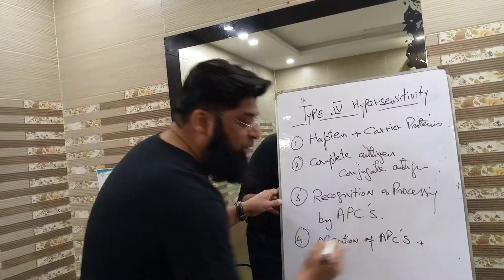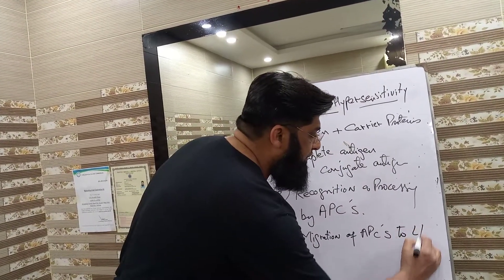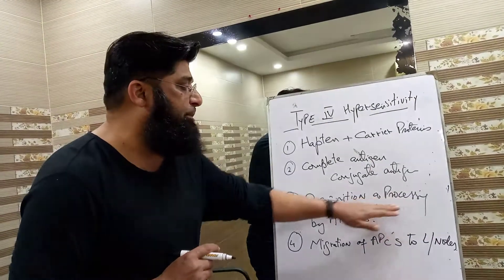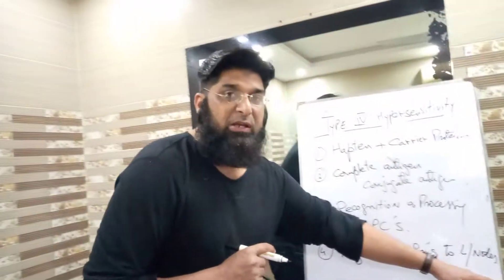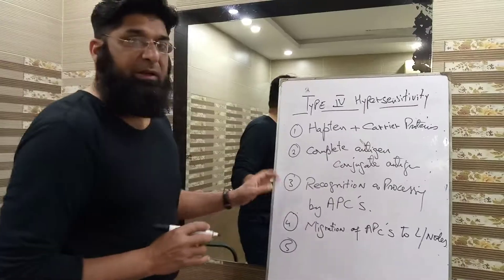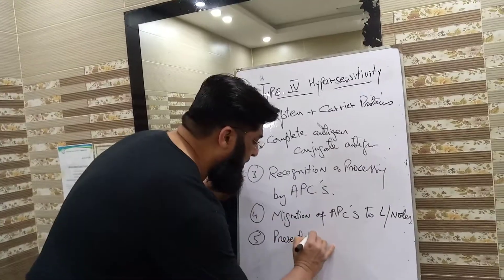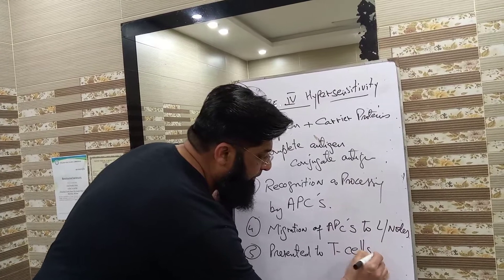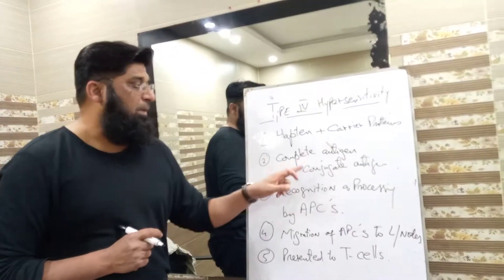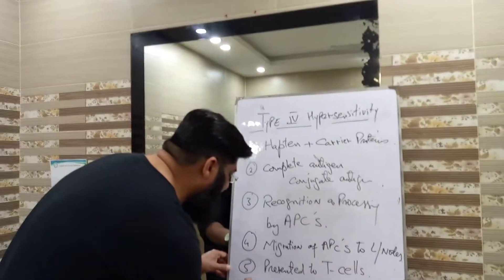Next: recognition and processing. The complete antigen is recognized and processed by antigen-presenting cells (APCs). These APCs — which may be macrophages or dendritic cells present in the epidermis — then migrate to the regional lymph nodes, where they present the complete antigen to the T lymphocytes.